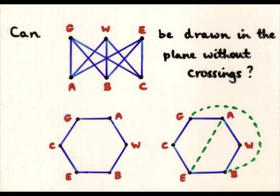And now what about C to W? If it goes inside, it crosses that one. If it goes outside, it crosses that one. And therefore, it's impossible. So that shows that the answer to this is no.